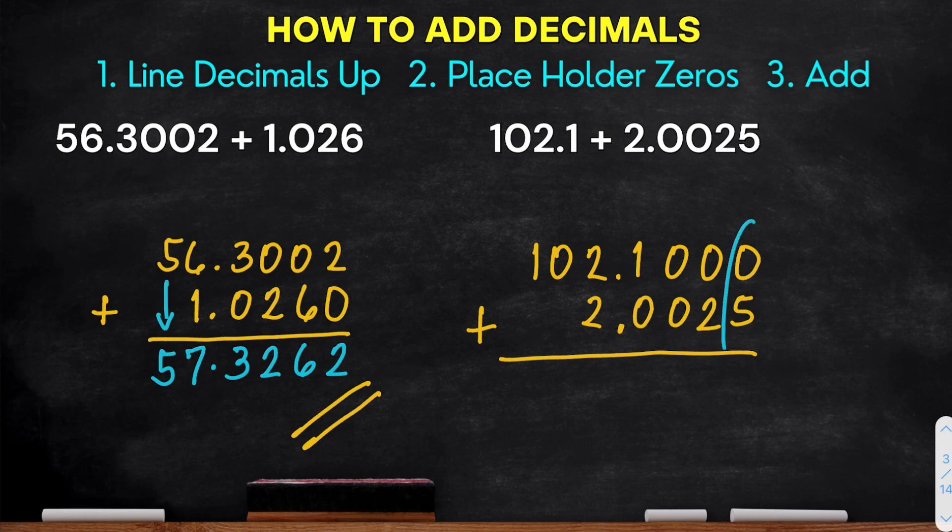So starting at the right most, 0 plus 5, that is 5. 0 plus 2, 2. 0 plus 0 equals 0. 1 plus 0 equals 1. Then place the decimal point. Okay. Then 2 plus 2 equals 4. Then bring down 0. And bring down positive 1. So here, our final answer is 104.1025.